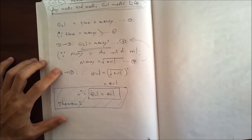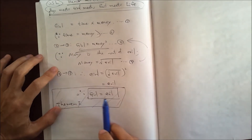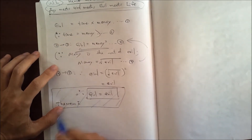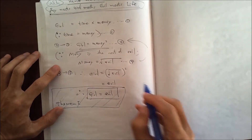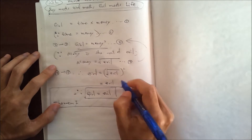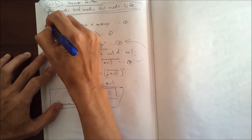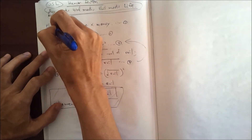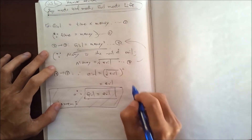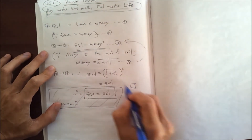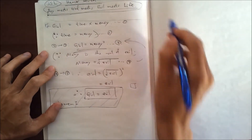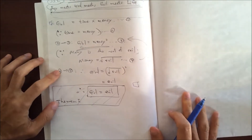So the first theorem was: girls are evil. This statement — the proof started from here, ended here, so that is the proof of the first theorem.